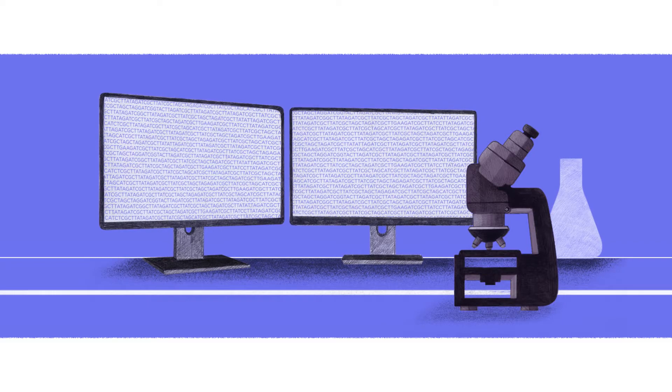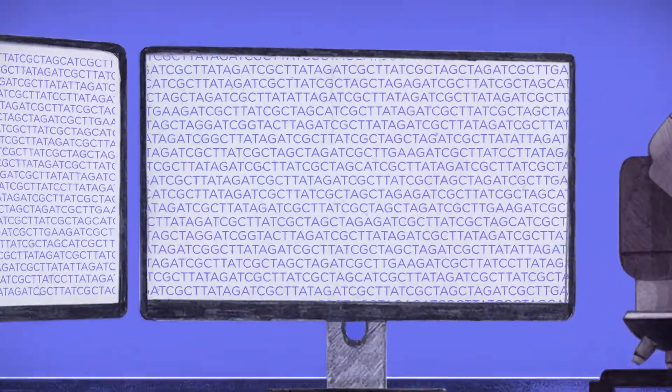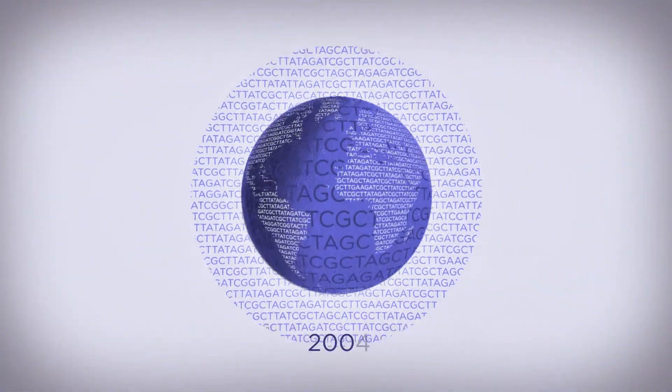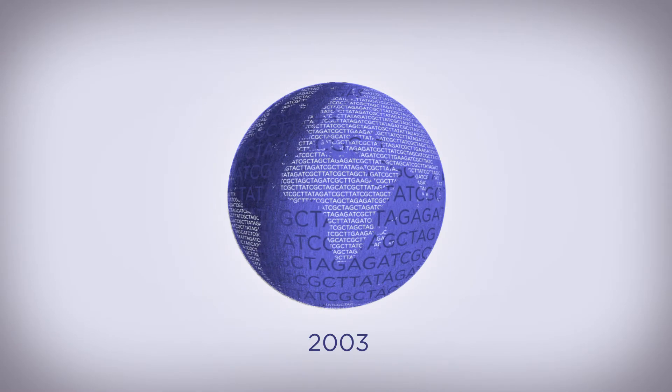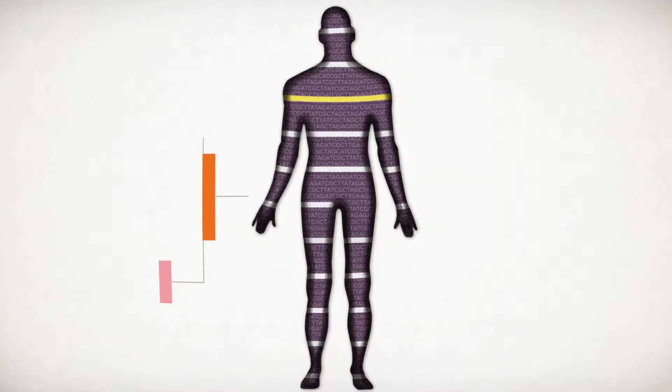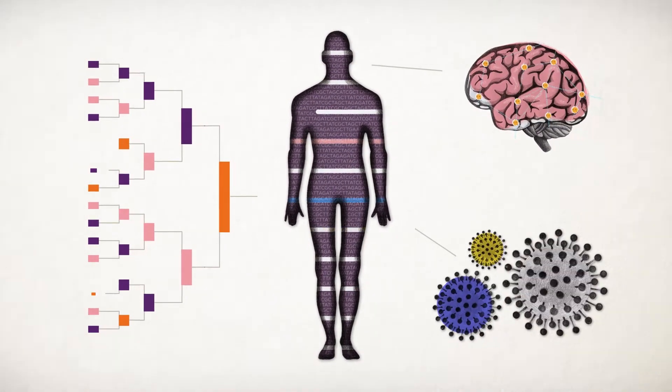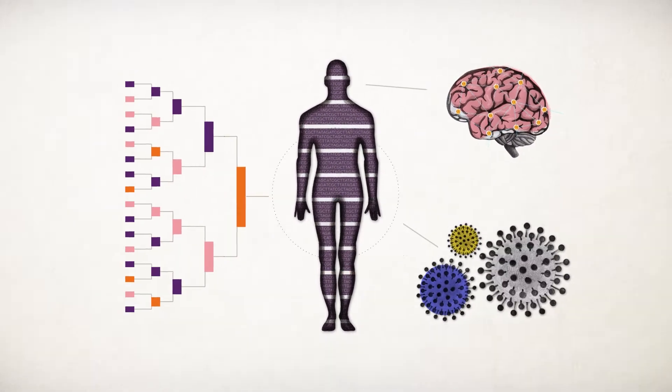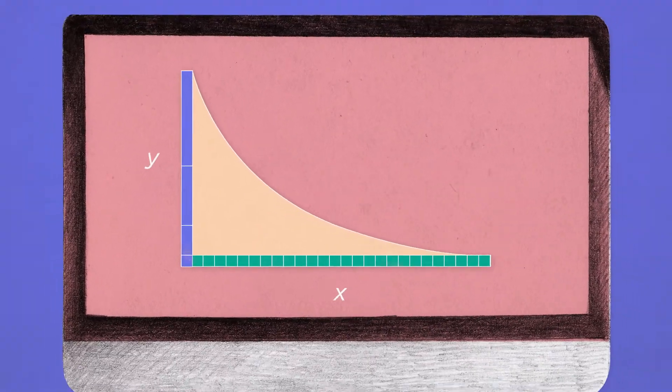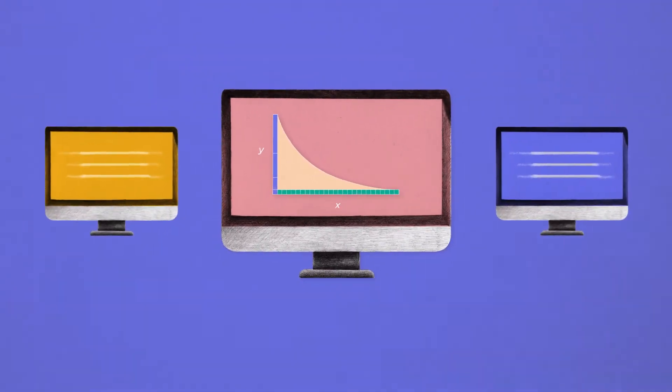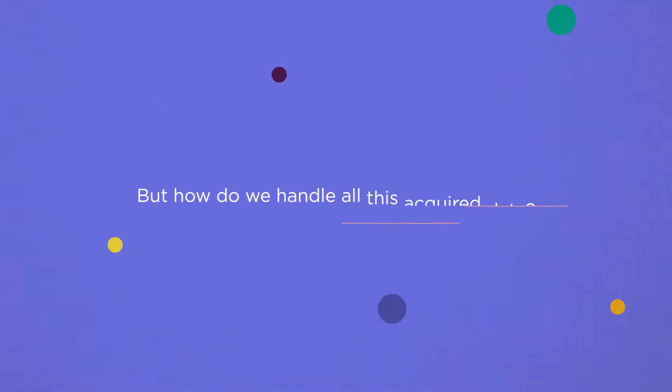This resulted in the rise of genomics in the early 21st century. The year 2003 marks the conclusion of the world's largest collaborative biological project: we've succeeded in reading the human genome. Since then, it has become significantly cheaper to gather DNA data, resulting in quick exponential growth of its volume. But how do we handle all this acquired data?